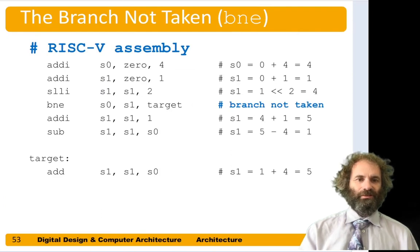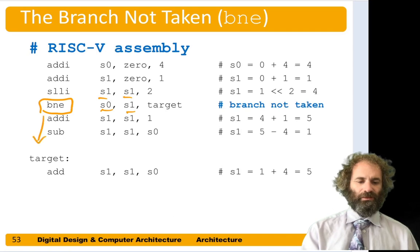Here's the same program, but the BEQ has been replaced by a BNE. So now S1 and S2 are both 4 again, and so they're equal. A branch on not equal therefore is not taken, and we just continue executing the program.